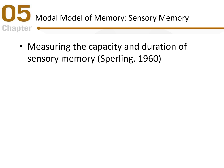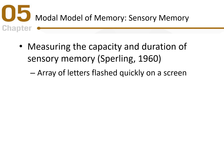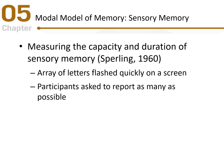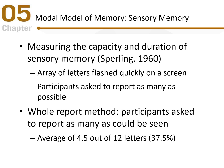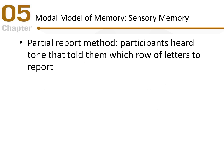To measure the capacity and duration of sensory memory, Sperling conducted a study in 1960. An array of letters was flashed very quickly on a screen, and participants were asked to report as many letters as possible. Using the whole report method — reporting as many as they could — participants reported seeing an average of 4.5 letters out of 12, about 37.5 percent.